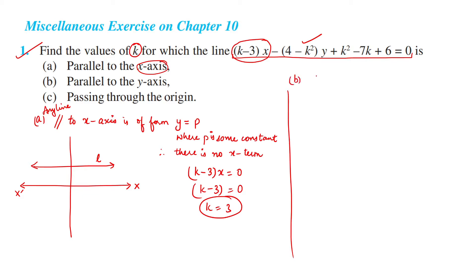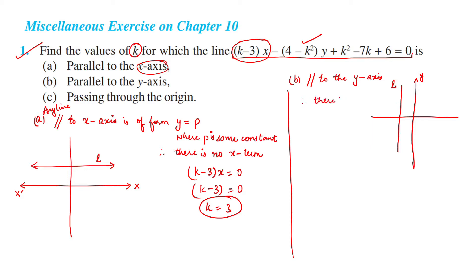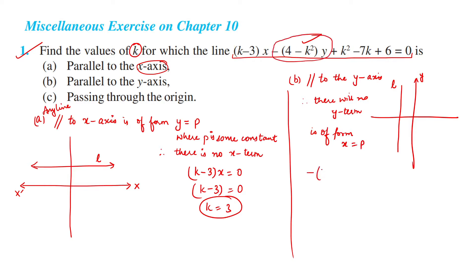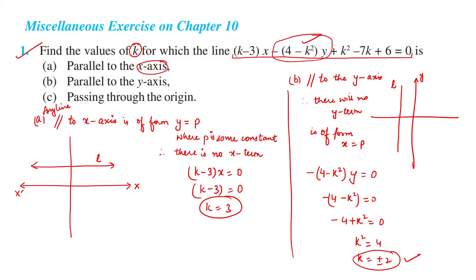Second part, Part B: parallel to the y-axis. Any line parallel to the y-axis is of the form x = p, where p is some constant, so there is no y term. We set the y coefficient to zero: minus 4 minus k² = 0, so k² = 4, giving k = ±2.